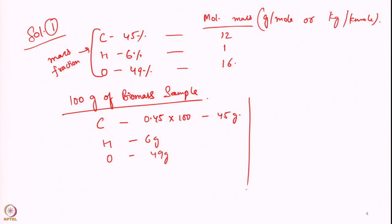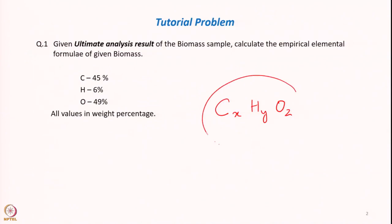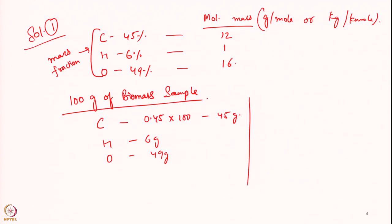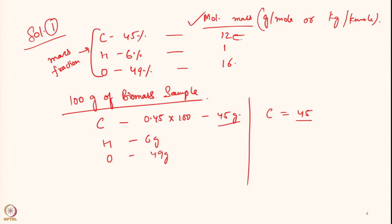Now we need to find how many moles we have, because the empirical formula is on a mole basis. We must convert from mass basis to mole basis. We take the number of grams and divide by the molecular mass of each species. For carbon: 45 ÷ 12 = 3.75 moles.